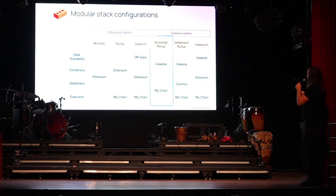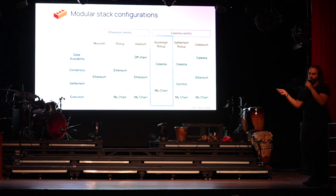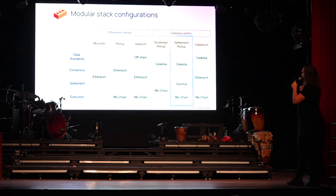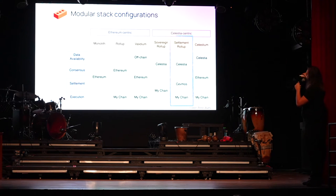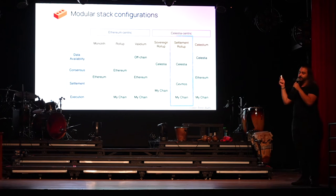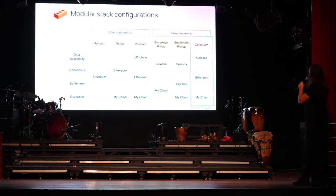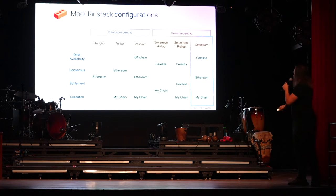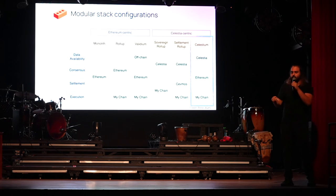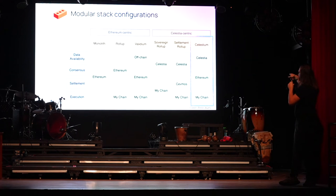With the Celestia-centric design, we have the sovereign rollup concept we covered before - Celestia provides data availability and consensus, and settlement and execution are handled by your sovereign rollup. There's also a settlement rollup example where Celestia does data availability and consensus, and you deploy your own settlement layer - it could be EVM-based or Solana-based - with an execution environment on top. Finally, there's the concept we call Celestium - if you're Optimism and culturally aligned with Ethereum, you can still settle on Ethereum but get data availability from Celestia off-chain. There's also the Validium concept where data availability is off-chain, Ethereum just provides consensus and settlement.